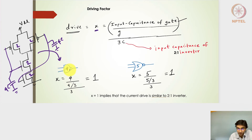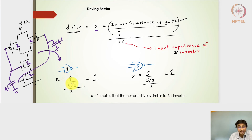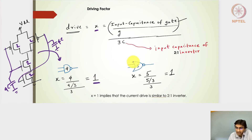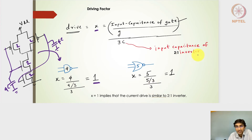For a two-input NAND gate of size 4, the driving factor is 4C divided by the logical effort G = 4/3, divided by 3C (input capacitance of the 2-to-1 inverter). The 3s cancel and the 4s cancel, giving x = 1. Similarly, for a two-input NOR gate of size 5, we get 5C divided by the logical effort 5/3, divided by 3C, and the x value is also 1.